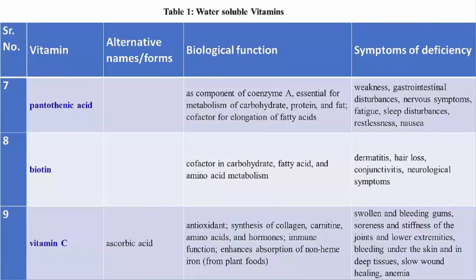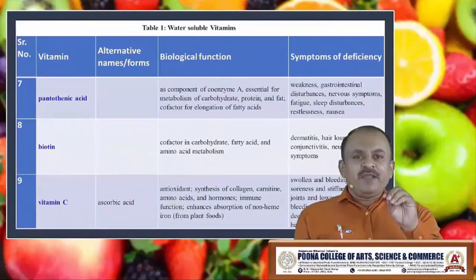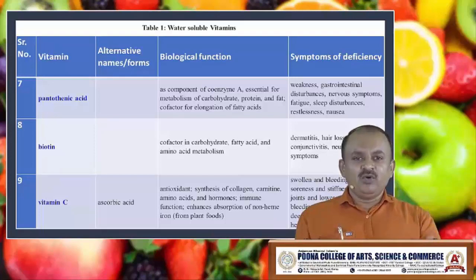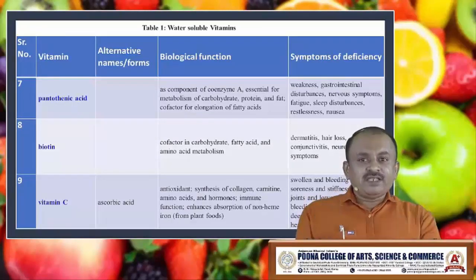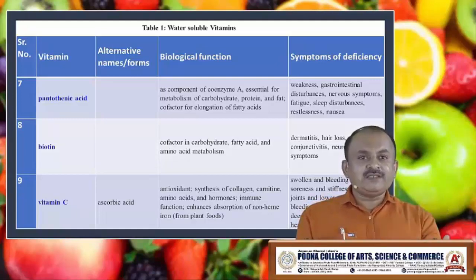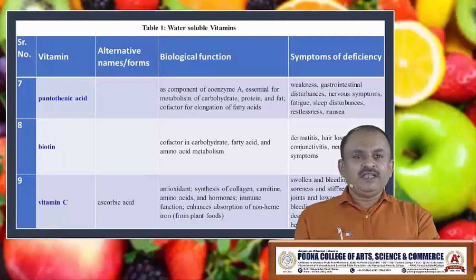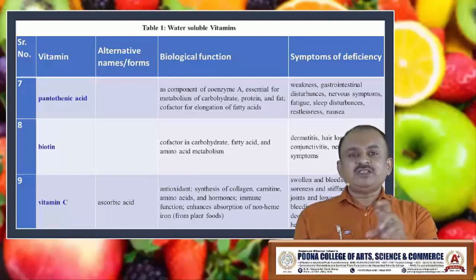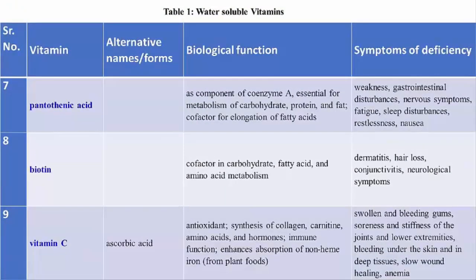Pantothenic acid involves metabolism of coenzyme A and is essential for metabolism of carbohydrates, proteins and fat, as well as elongation of fatty acids. Deficiency leads to weakness, gastrointestinal disturbances, nervous symptoms, fatigue, sleep disturbances, restlessness and nausea. Biotin is an important cofactor for carbohydrate and fatty acid metabolism, as well as amino acid metabolism. Deficiency of biotin causes dermatitis, hair loss, conjunctivitis and neurological symptoms.